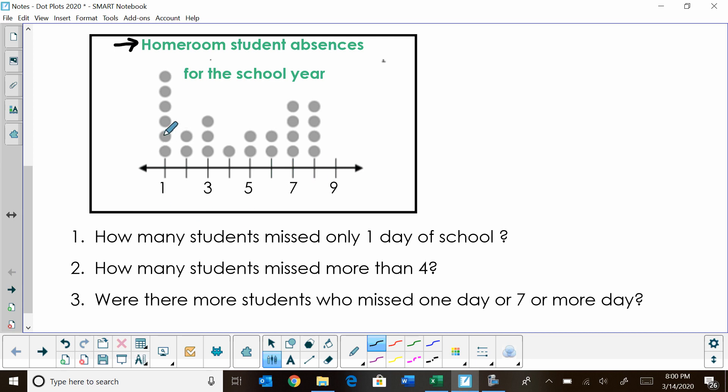Each dot represents one student. For example, there were five absences. We have two students right here that missed five days of school. We have one student that has missed four days of school. And this represents a homeroom class. So let's try to answer the questions.